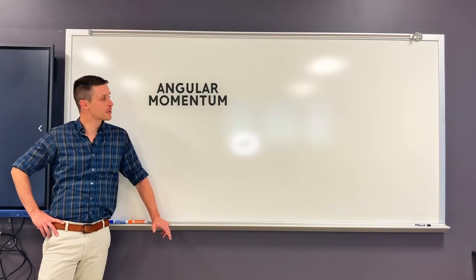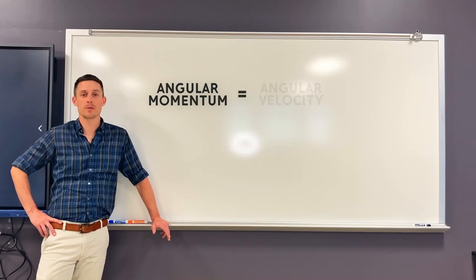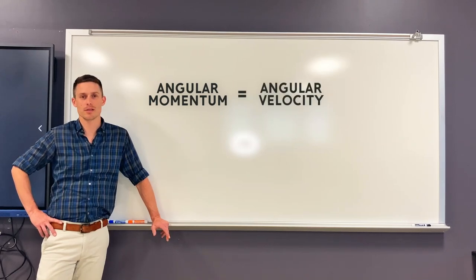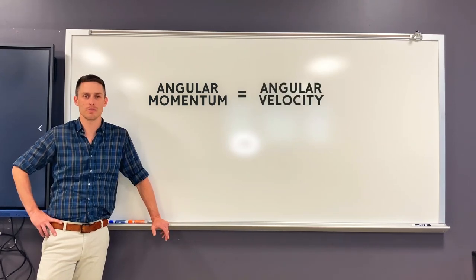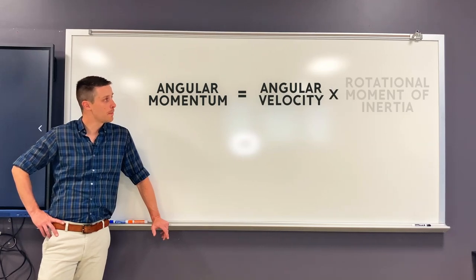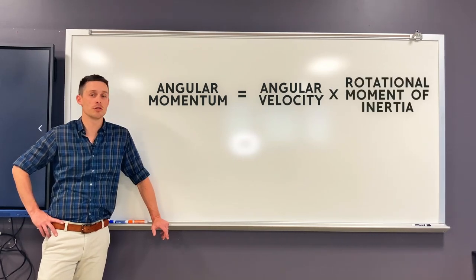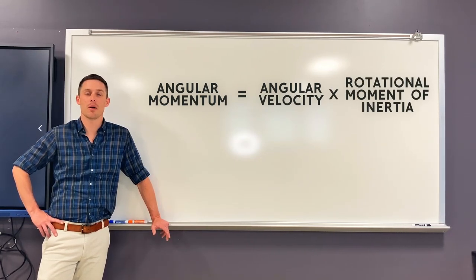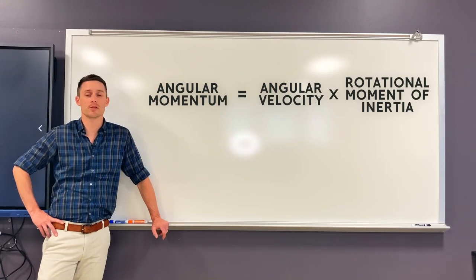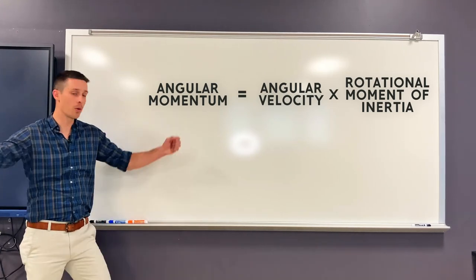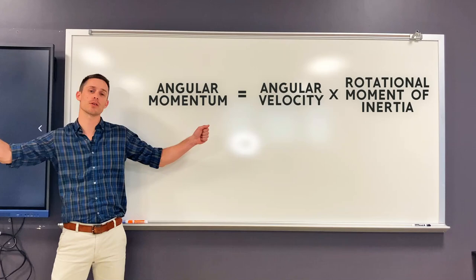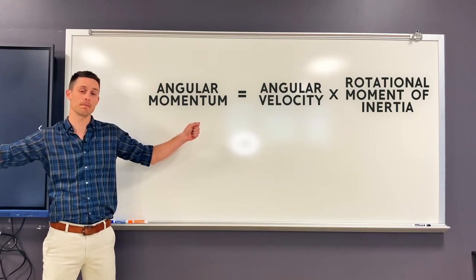Now the typical explanation for this problem goes like this. Angular momentum is the product of two quantities. The first being angular velocity, which is a measurement of how fast something's rotating. The second quantity being rotational moment of inertia — a measurement of how hard it is to get something to spin, or to stop it from spinning.